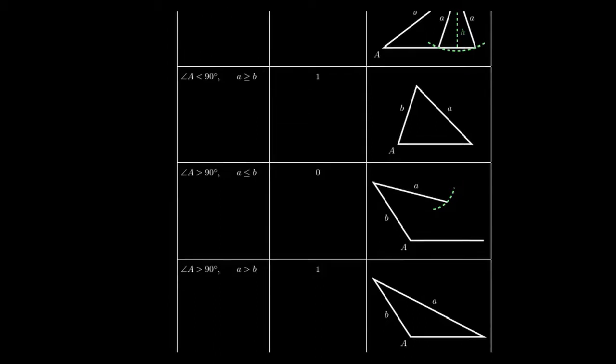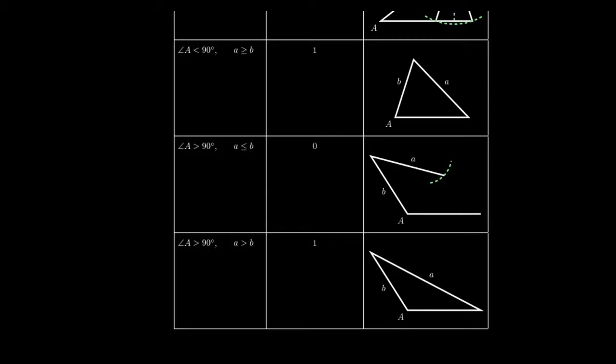Now let's consider the case where A is an obtuse angle, so A is larger than 90 degrees. If little a is less than or equal to B, then you get no possible triangle. This is the same situation as before. Since A is just—A should be the longest side, because if angle A is larger than 90 degrees, it's obtuse, and a triangle can only have one obtuse angle. That means the obtuse angle is the largest angle of the triangle, and its opposite side should be the longest side.